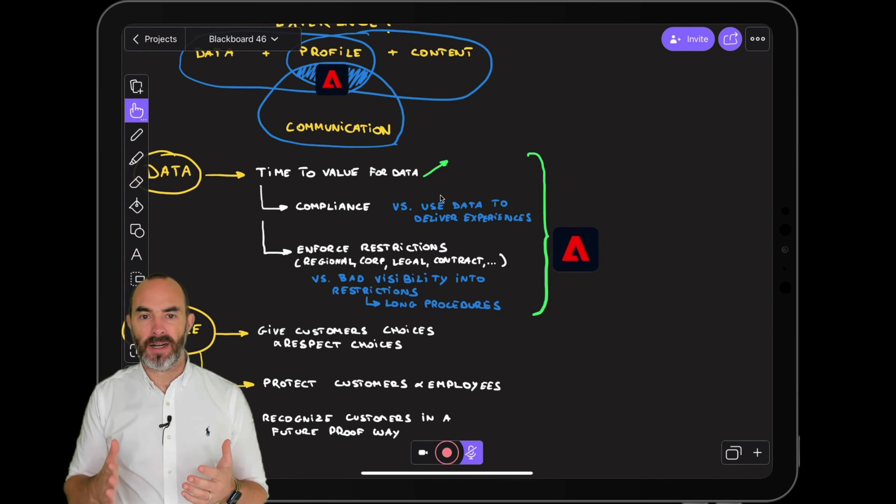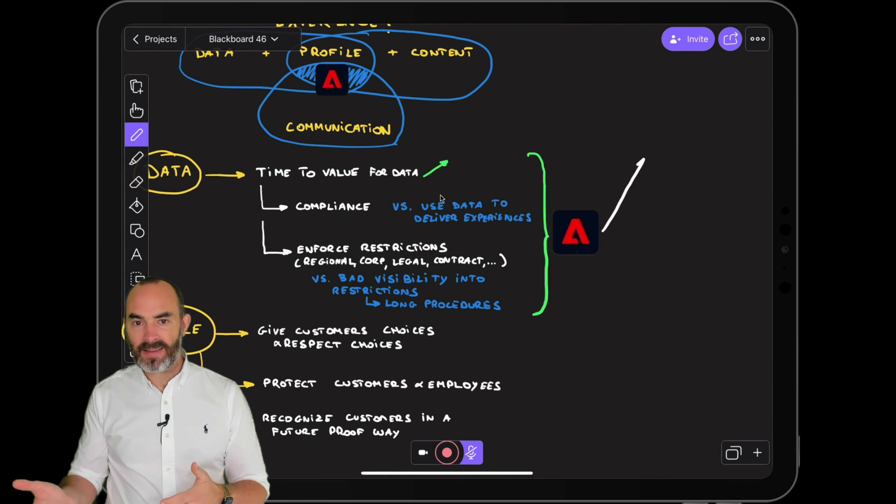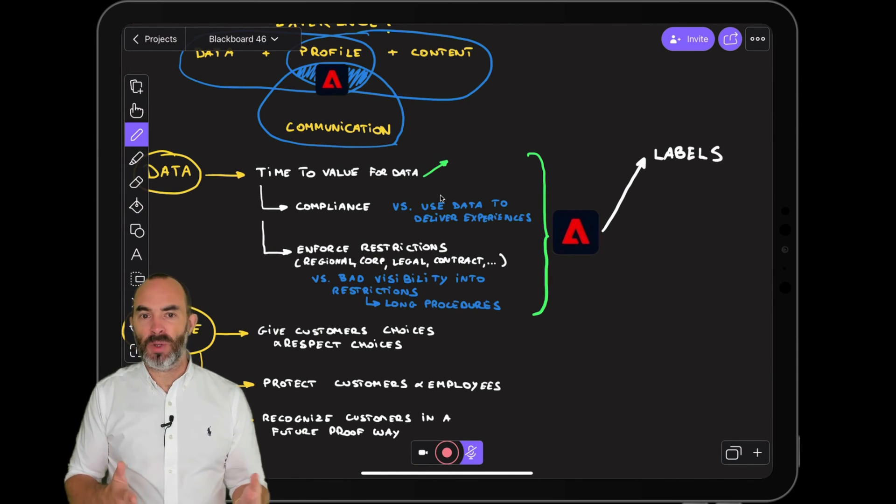In this platform data analysts will label data based on the type of data that's being collected. The data guardians then need to define the policies that define what can and cannot be done with the data that is labeled, who can see the data, who can use it and to which destination that data can be shared. And finally you need a platform that enforces all these policies automatically to protect your customers and your employees.